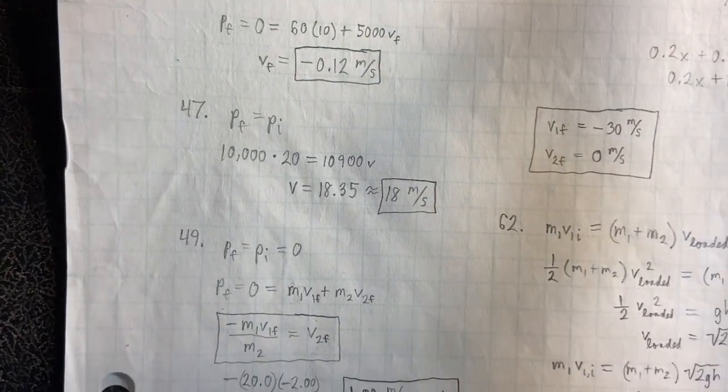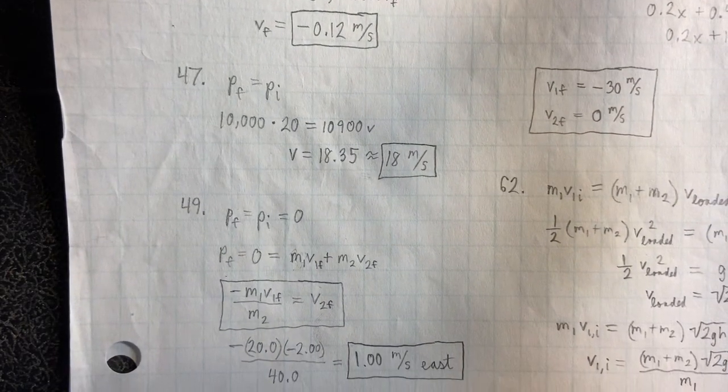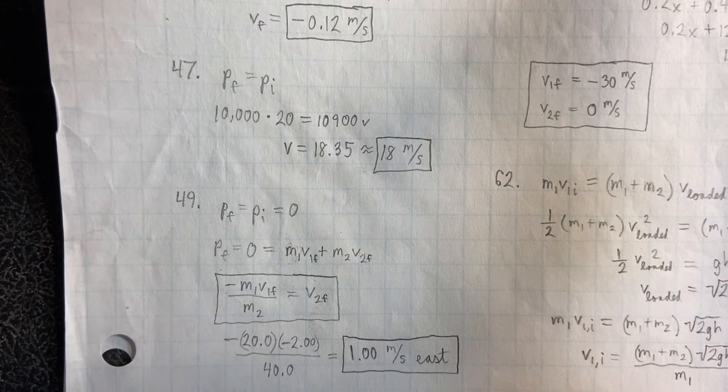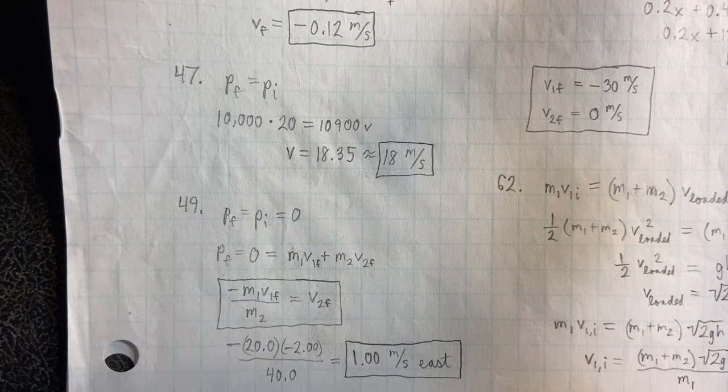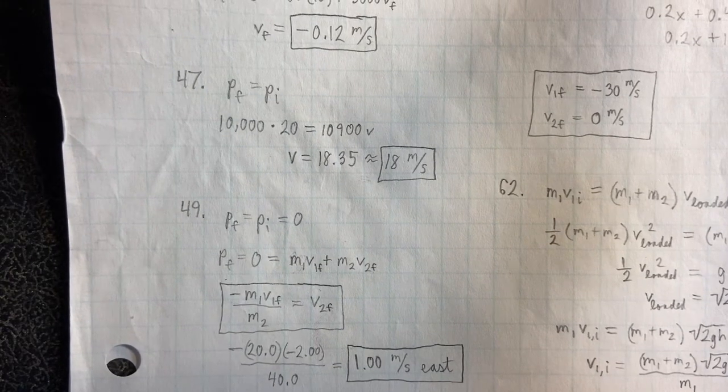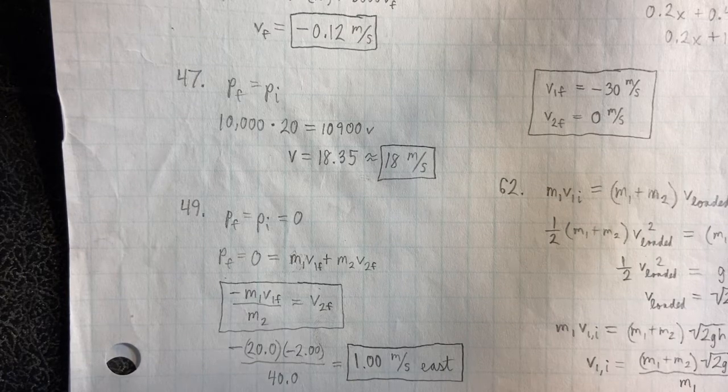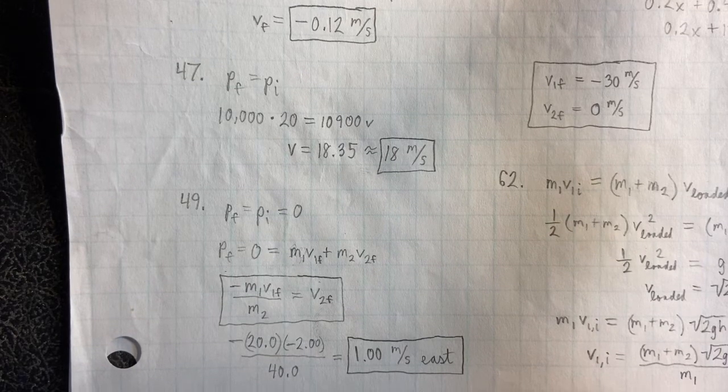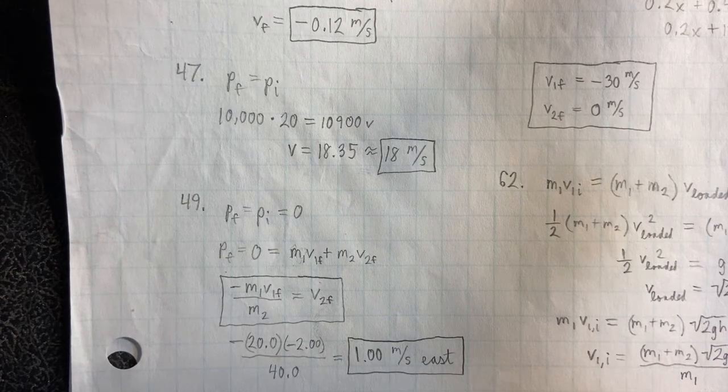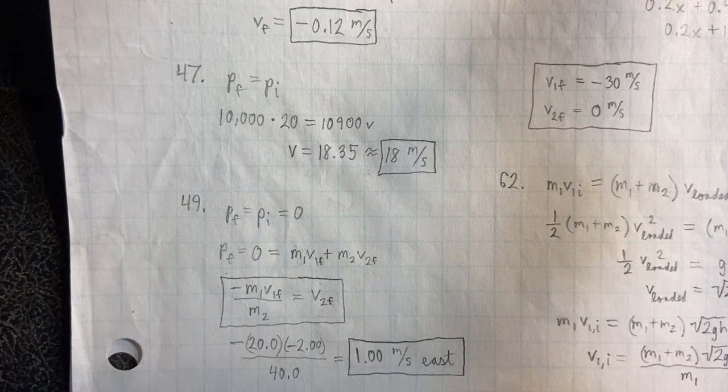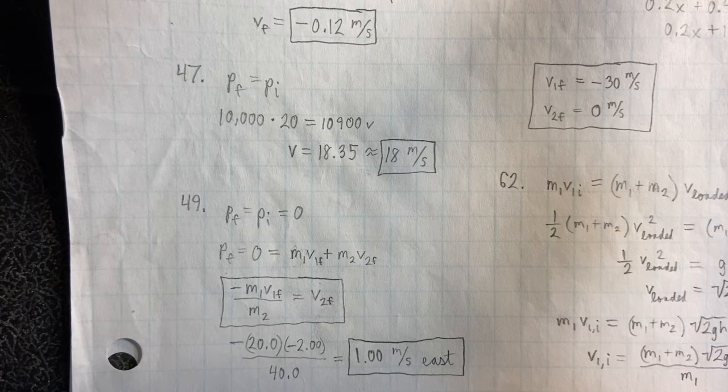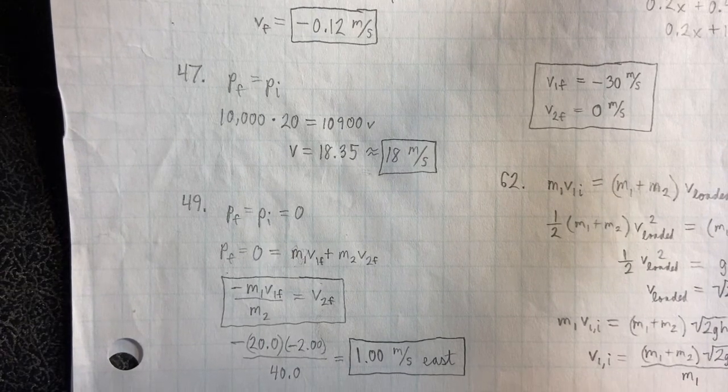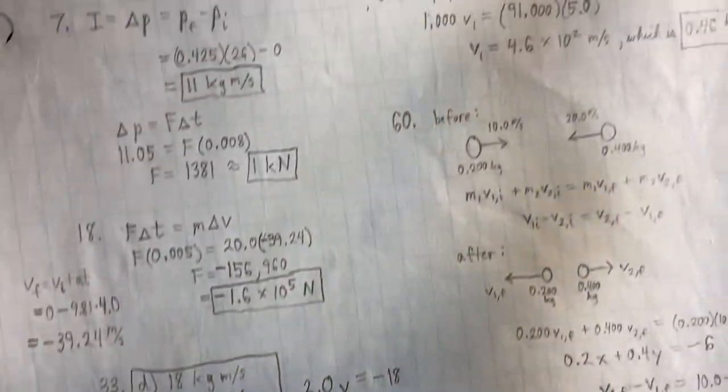In 49, we have PF equals PI equals zero. Same setup, which means M1V1F plus M2V2F equals zero. And rearranging things to get V2F by itself, we have negative M1V1F over M2. And at this point, we can just plug and chug to get 1.00 meters per second east. It is important to put the direction because this is a vector.